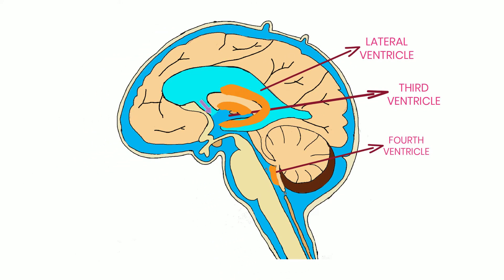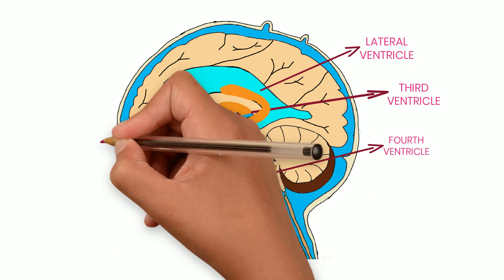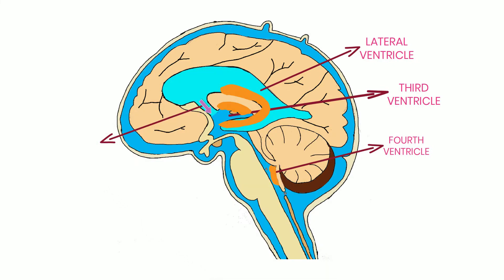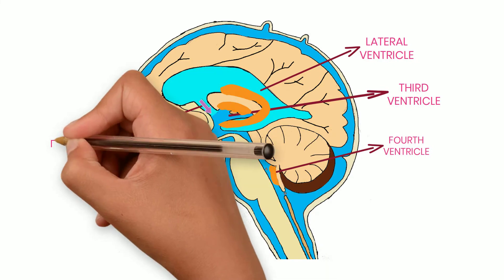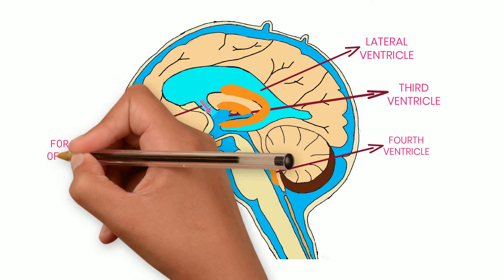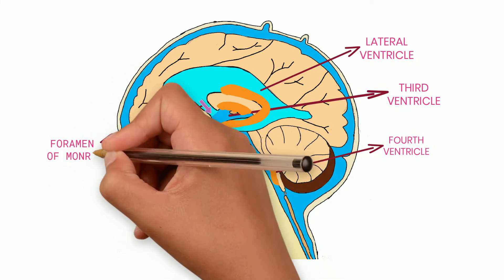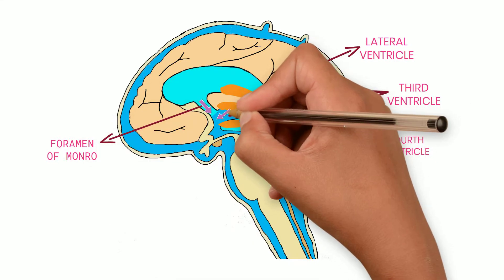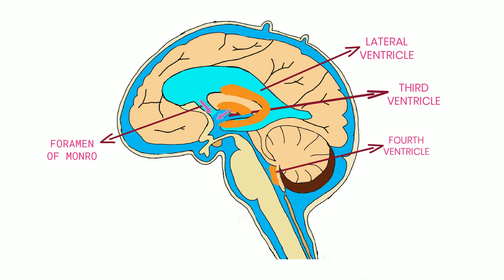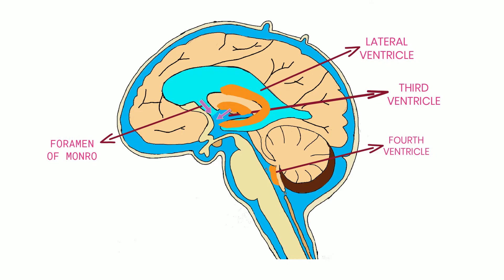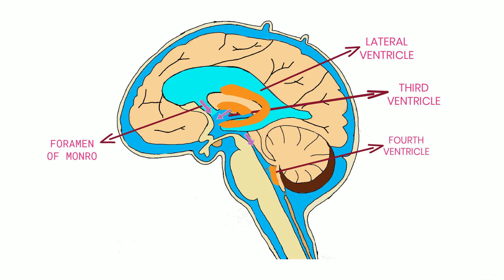CSF produced by the choroid plexus of the lateral ventricles flows into the third ventricle by passing through the foramen of Monro. A small amount of CSF is added by the choroid plexus of the third ventricle. Then it flows into the fourth ventricle by passing through the aqueduct of Sylvius.